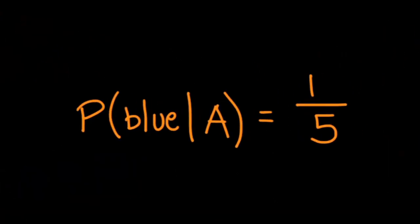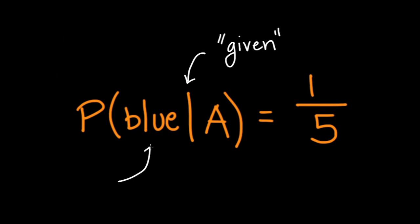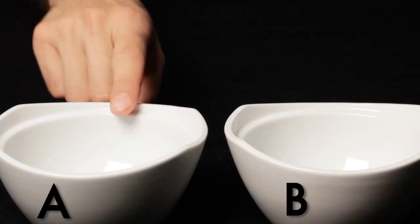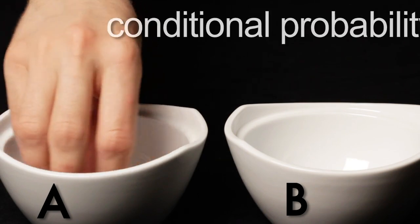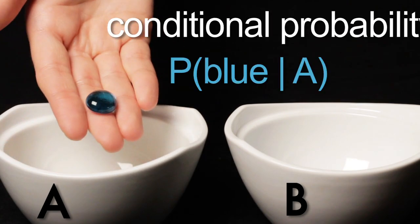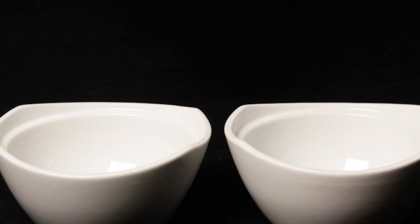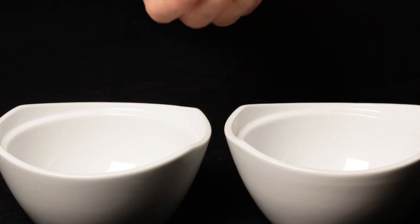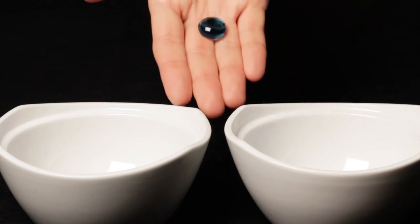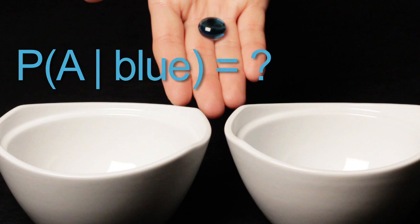This is standard notation for conditional probability. The vertical bar is read as 'given.' The probability we are looking for precedes the bar, and the condition follows the bar. In the previous example, we calculated the conditional probability of drawing a blue marble given that we draw from bowl A. Now let's flip things around. Suppose someone picks a marble at random from either bowl A or bowl B and reveals that the marble drawn was blue. What is the conditional probability that the marble was drawn from bowl A given that it is blue?